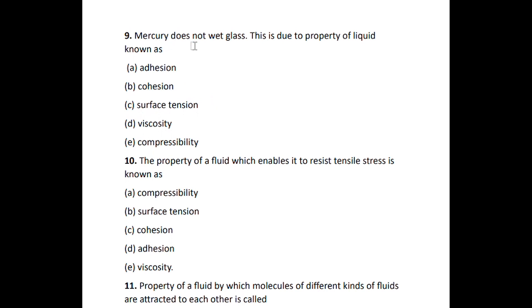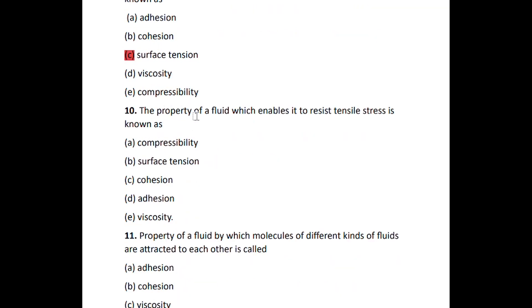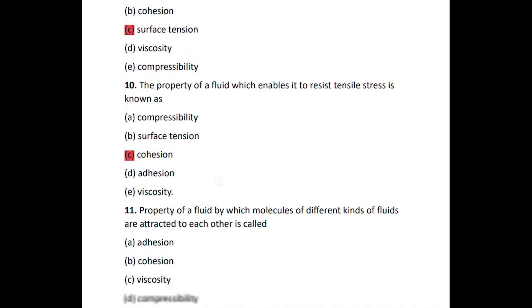Number nine: mercury does not wet glass. This is a property of liquid known as surface tension. Number ten: the property of a fluid which enables it to resist tensile stress is known as cohesion, because here the molecules of the fluid will be attracting each other, preventing them to move away, therefore resisting tensile stress.